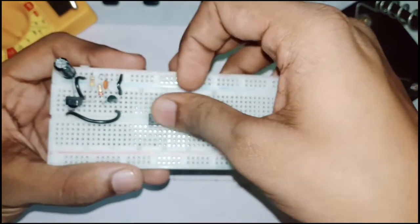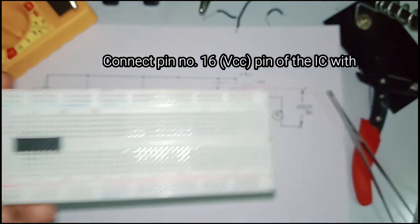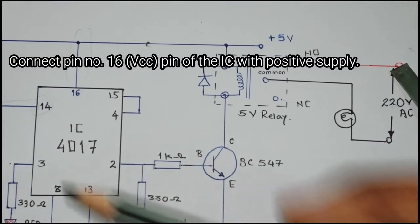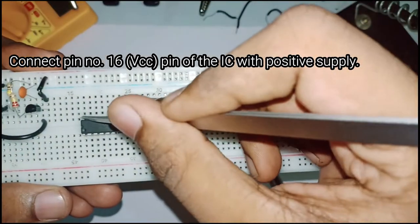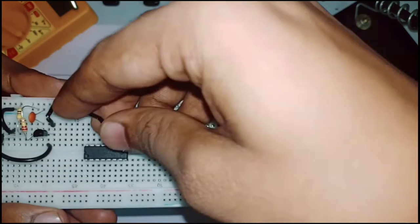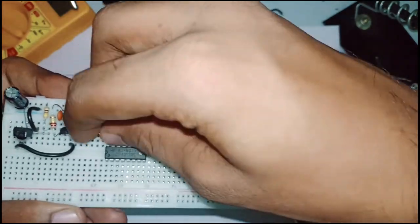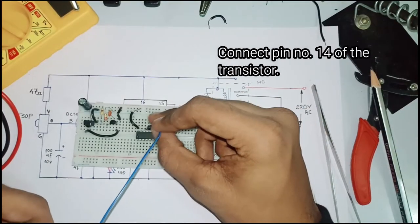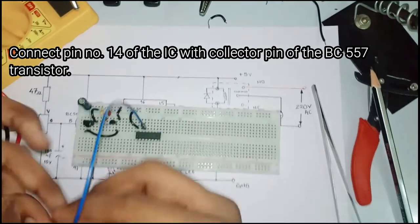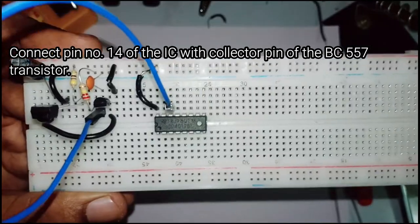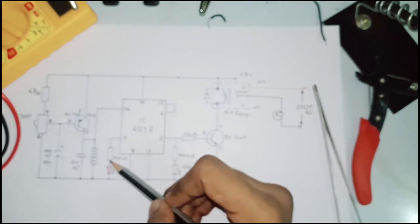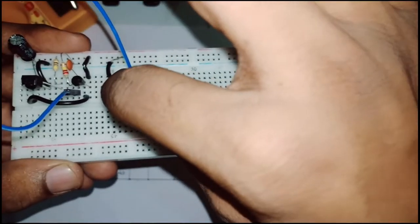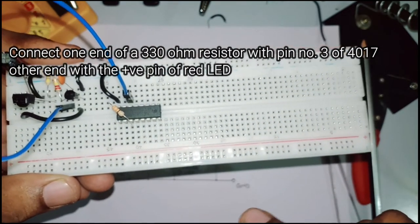We are using only three outputs of this IC out of 10. The first output is pin number 3, the next is pin number 2, and then comes 4. We are going to short pin number 4 and pin number 15 of this IC. Pin number 15 is the reset pin and it is going to bring the output back to pin number 3, that is the first output. Pin number 8 is the ground pin that is to be connected to the ground, and pin number 16 is the VCC pin that is to be connected with the positive power supply.